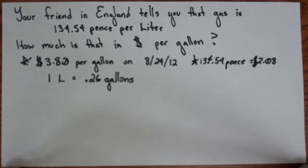Now last but certainly not least, so you have a friend in England that tells you that gas is 134.54 pence per liter. And you're thinking, how much is that, is that expensive? So how much is that in dollars per gallon? Well, on August the 24th, 2012, when I did this video, gas was averaging about $3.84 per gallon. And the conversion for 134.54 pence, British sterling pence, was equal to about $2.08. And then the unit conversion for all of these things is 1 liter is equal to 0.26 gallons.